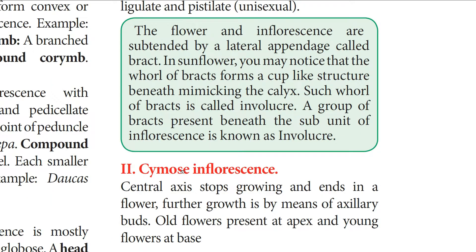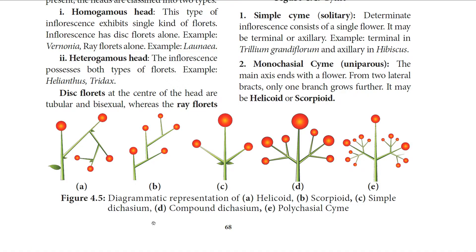In cymose inflorescence, the central axis stops growing and ends in a flower; further growth is by means of axillary buds. Older flowers are at the top (apex) and younger flowers are at the base. There are four types of cymose inflorescence: simple cyme, monochasial cyme, simple dichasium, and polychasial cyme.